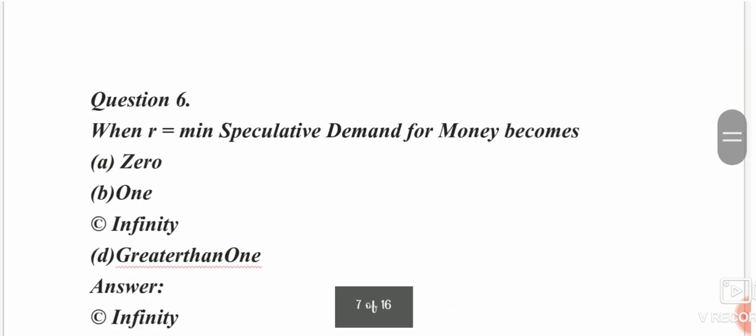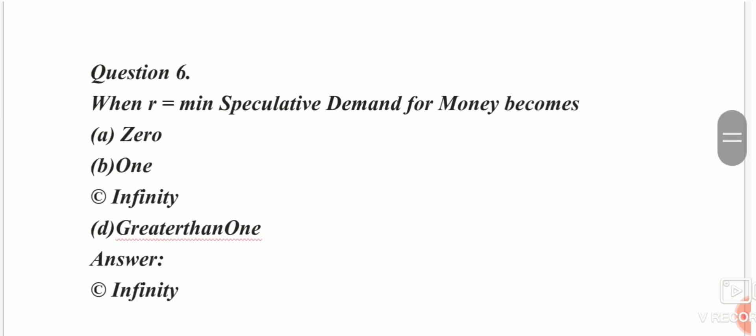When r equals minimum, speculative demand for money becomes infinity. The options are zero, infinity, or greater than one. The answer is infinity.